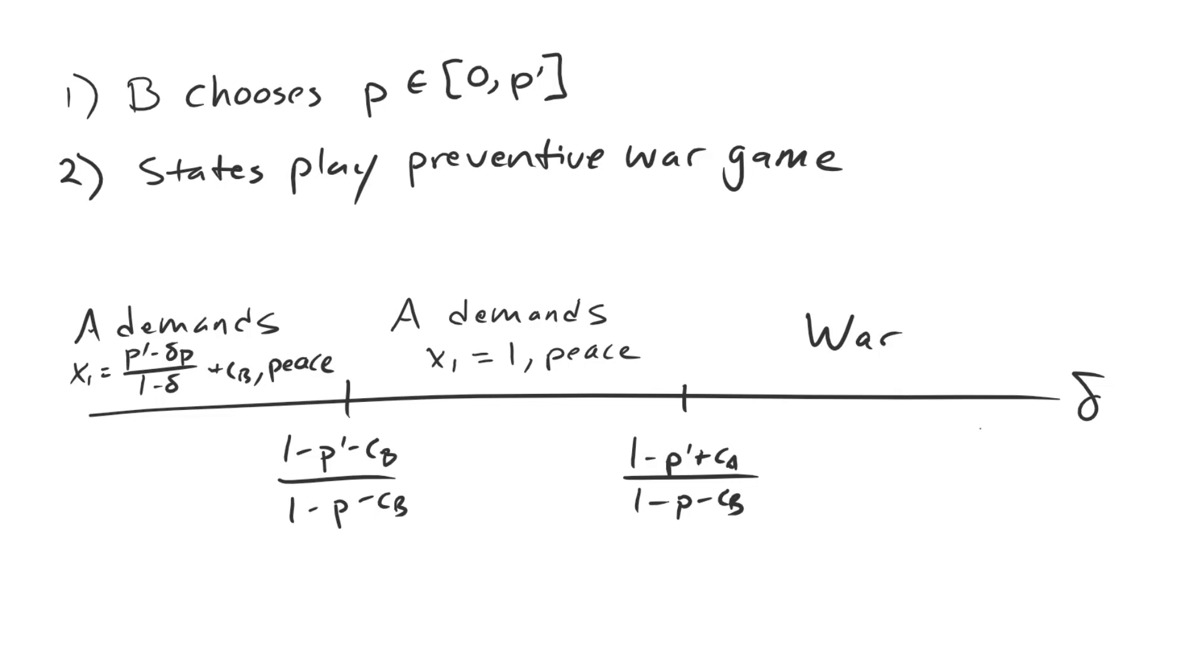So after b makes that decision, the states play the preventive war game that we explored last time. Just like it is before, with the only difference being that b has chosen that future distribution of power. Now this is convenient that we're actually having the same game as before as being the second step on your screen, because we've already solved that game. We know exactly what happens.